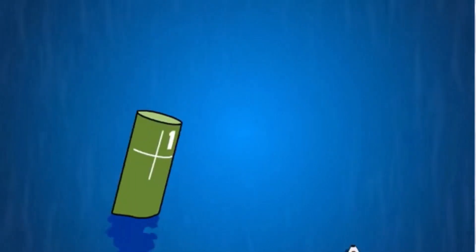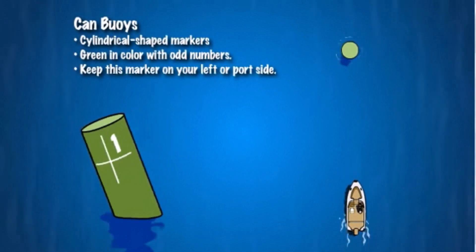Can buoys are cylindrical shaped markers that are always green in color with odd numbers.